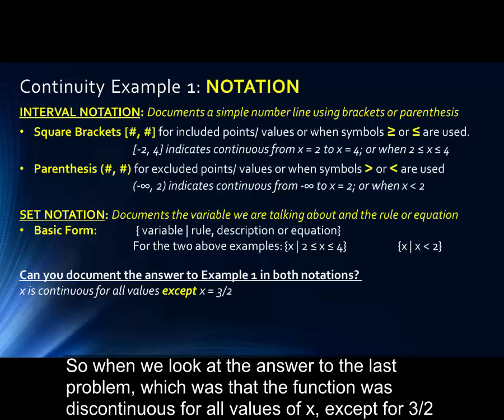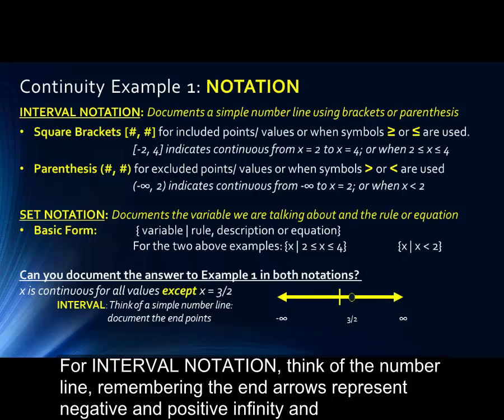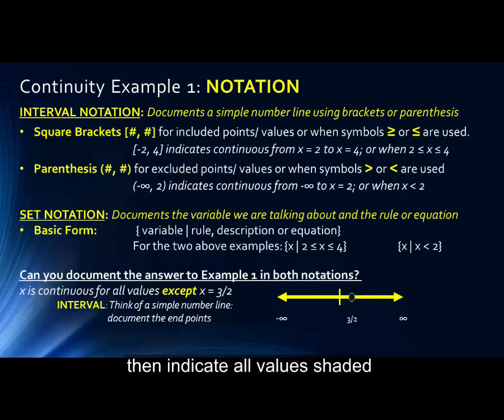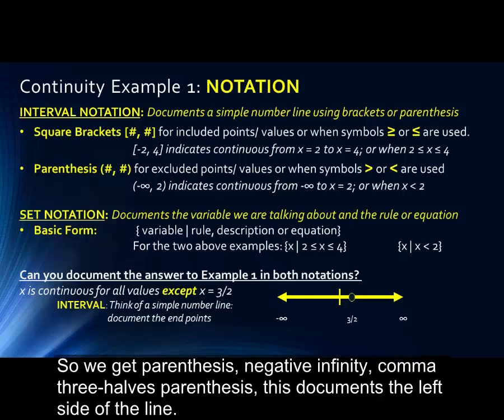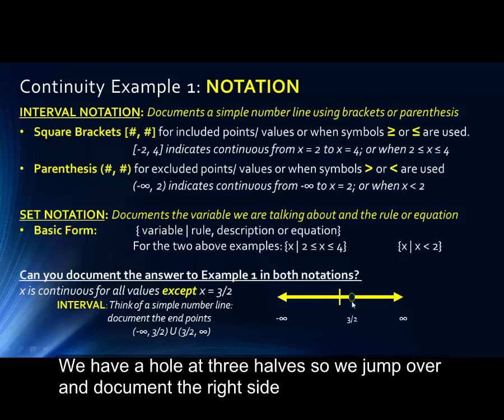So when we look at the answer to the last problem, the function was discontinuous for all values of x except x equals three halves. For interval notation, we think along the number line. The end arrows represent negative and positive infinity. We get parentheses, negative infinity, comma, three halves, parentheses. Notice this documents the left side of the line. We have a hole at three halves.